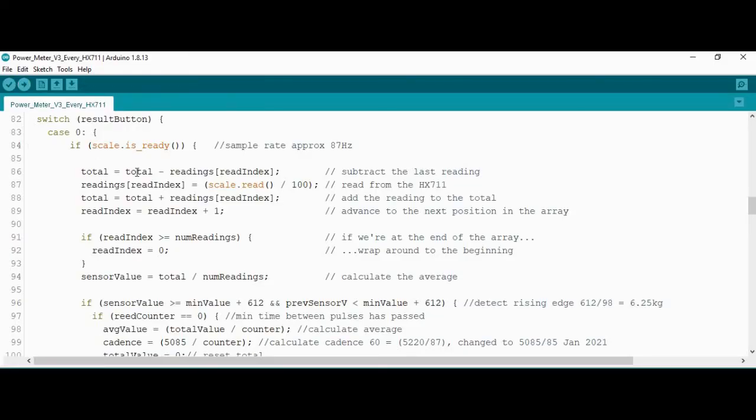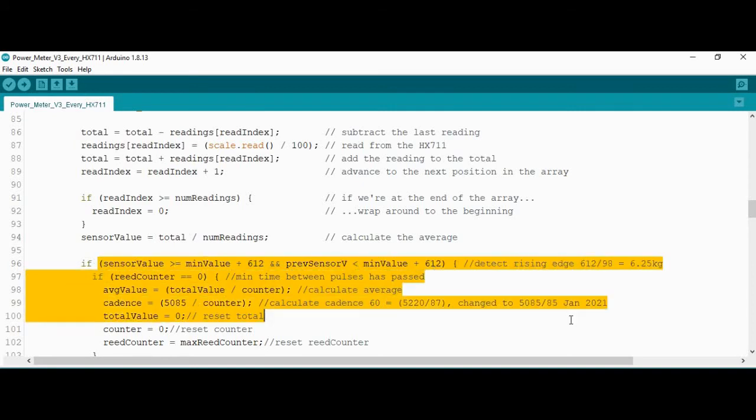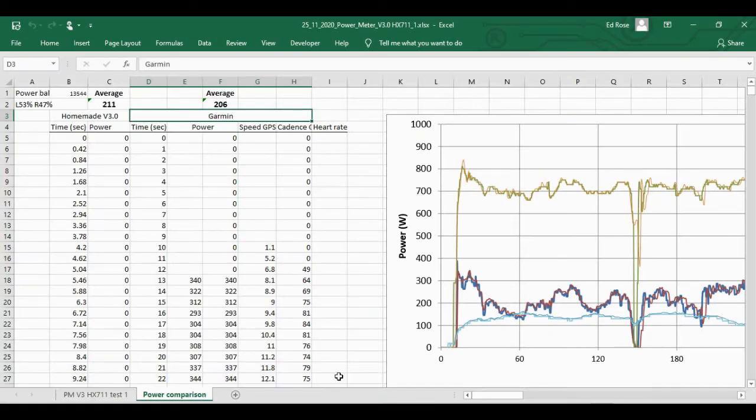I very successfully modified my power meter code to work with the HX711. This is code for the Arduino nano every but it also works on a typical nano as well. Here we've got reading from the scale at a rate of around supposed to be 80 Hertz, but I actually measured it to be 87. I wrote a piece of code to measure that, and this is used here like the 100 Hertz interrupt I had on the previous code for measuring cadence, for example, which is this piece of code here.